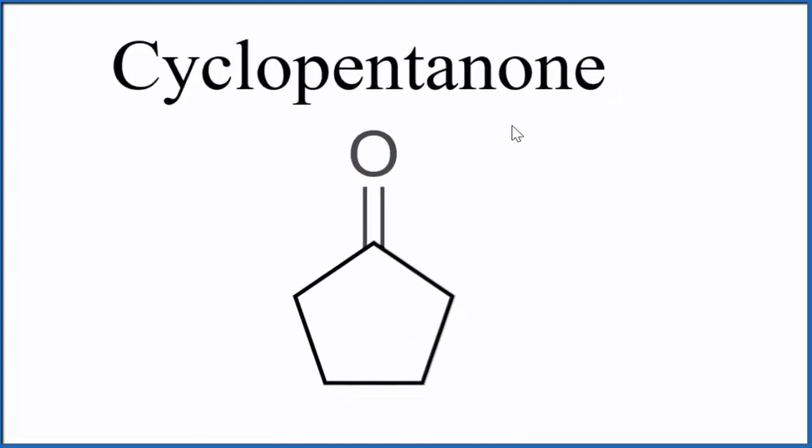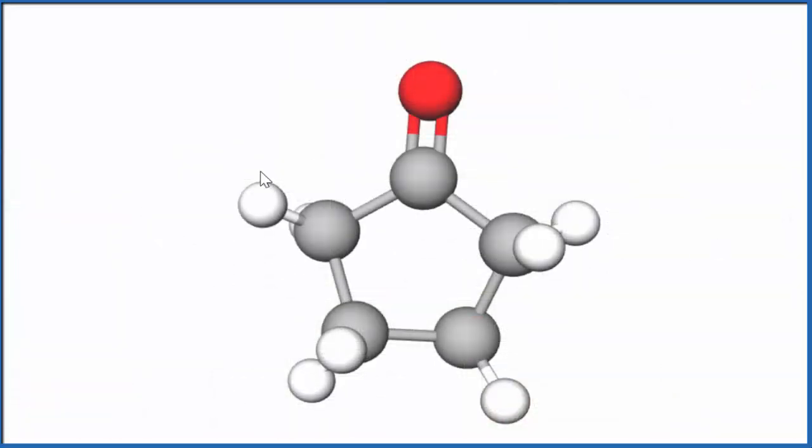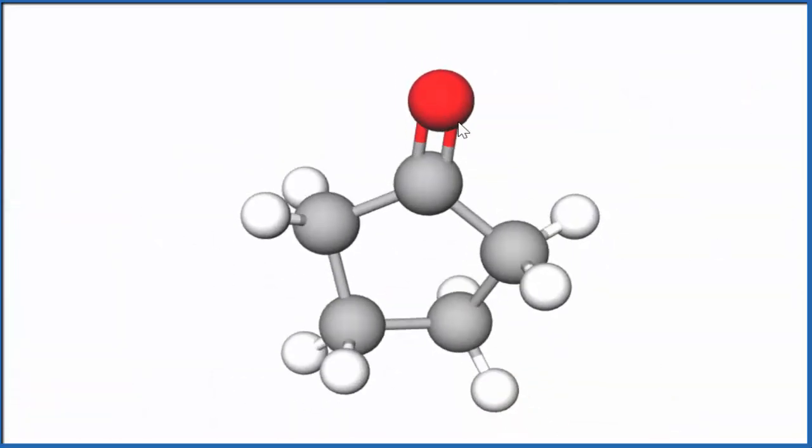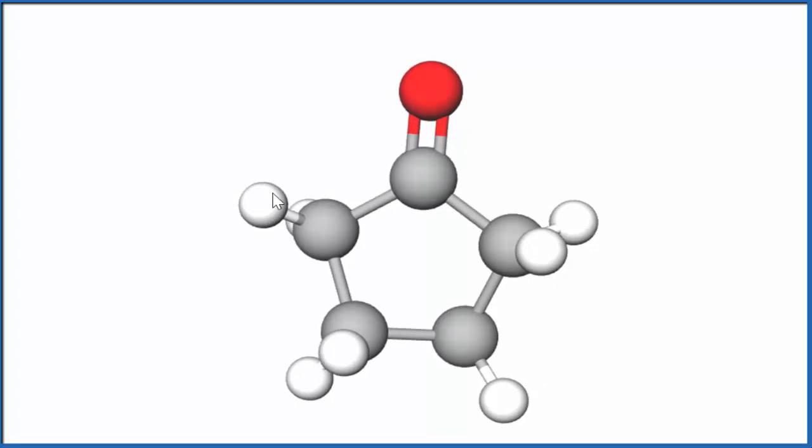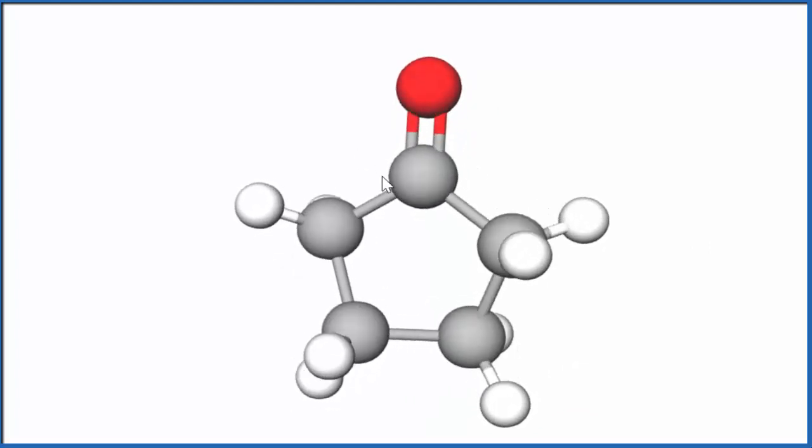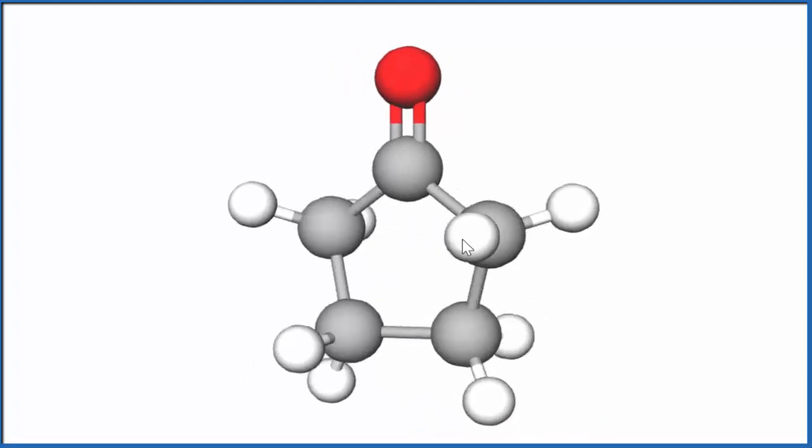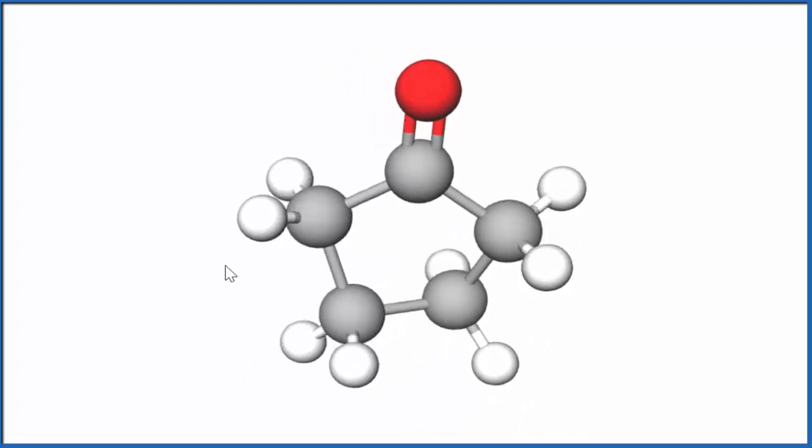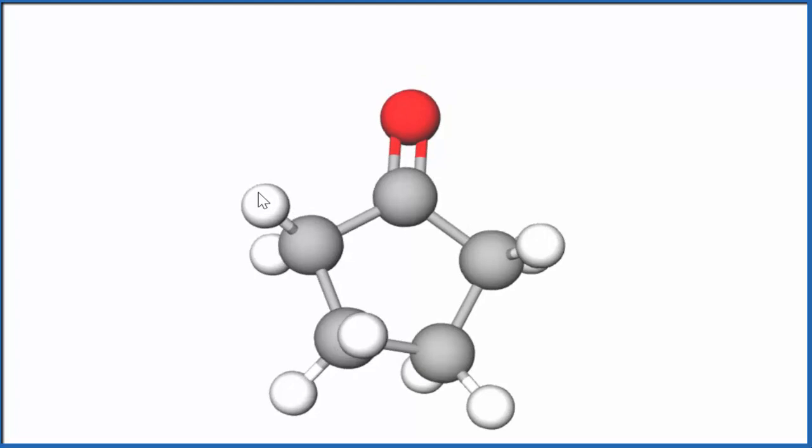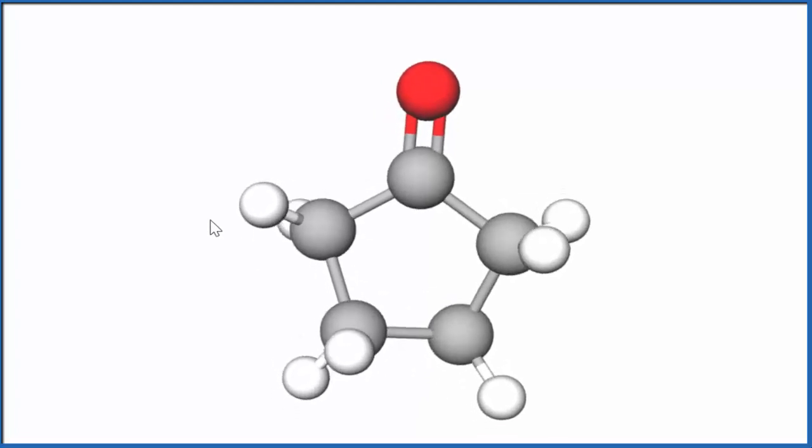Let's look at this in three dimensions. So here's the cyclopentanone. The red, that's the oxygen. Then the gray or black carbons. Whites are the hydrogen. So you can see no hydrogens here on this one with a double bond. And then we have two hydrogens on each one of the other of these carbons here. So that's it. That's the structure for cyclopentanone.